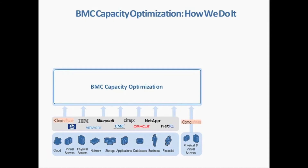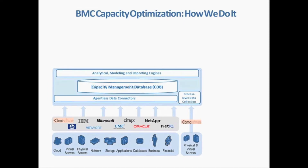How do we do it at BMC? The foundation is at the bottom — it starts with resources in your environment. You may have a private cloud, physical, virtual, storage, applications, databases. And then you've got financial and business metrics. These are one of the key differentiators that we bring to the table in our capacity optimization solution.